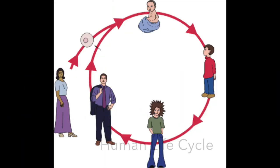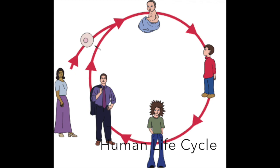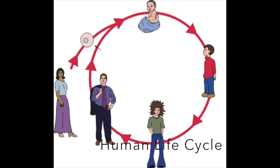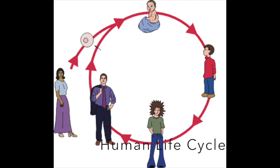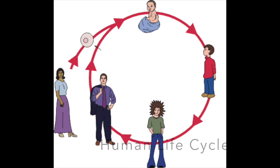Here you see the life cycle of a baby who's born, grows older, becomes an adult, has more children, and their children begin to grow up — and that would be the human life cycle.